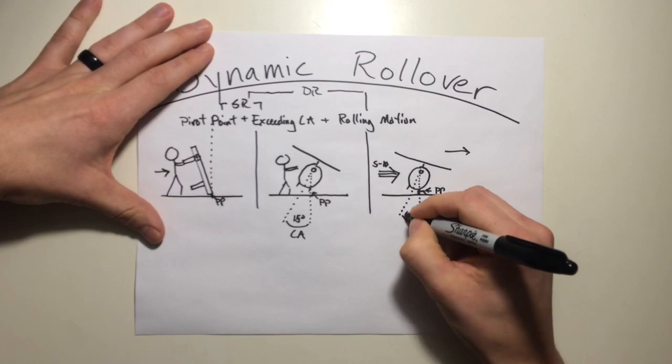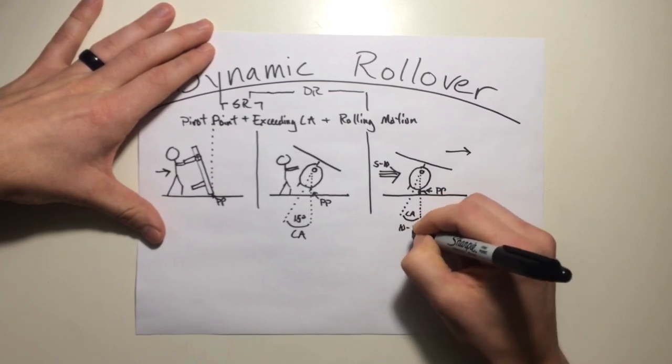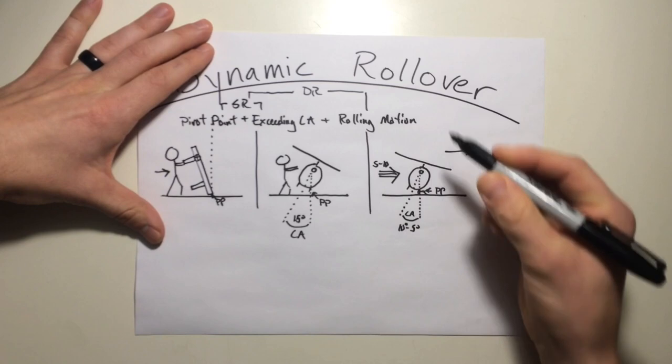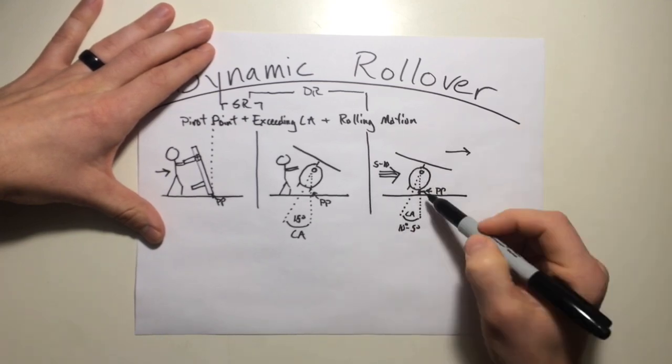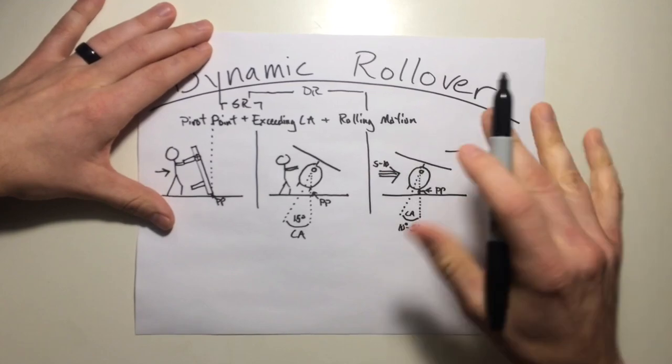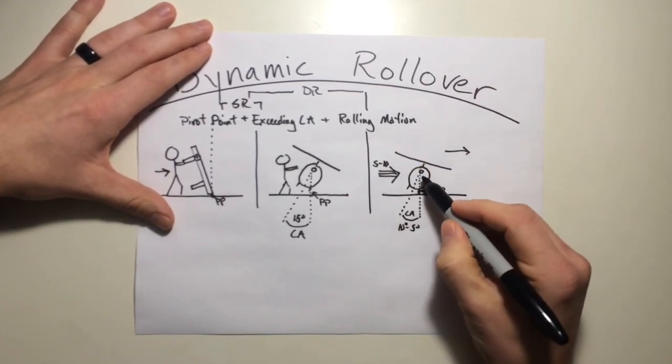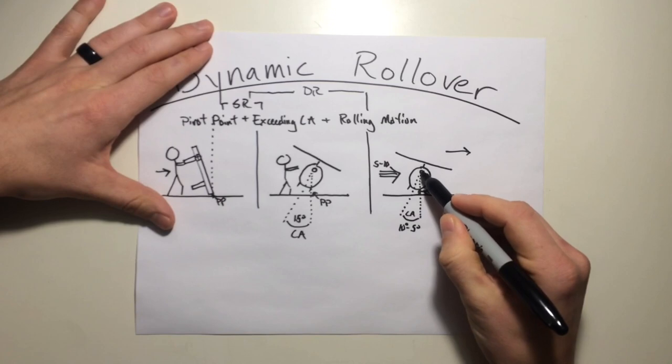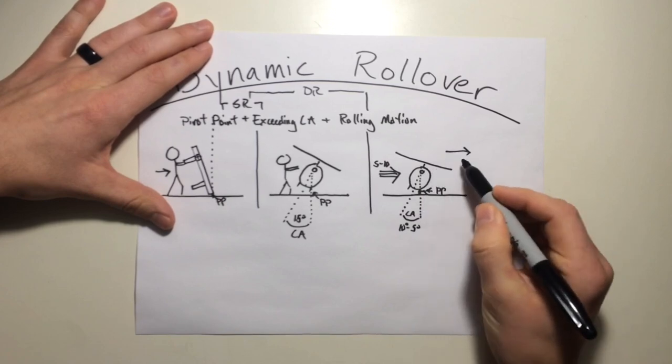Now we're moving along at maybe 5 to 10 or 15 knots or whatever. This critical angle now might have been reduced to maybe 10 to 5 degrees or so. And so we may hit a pivot point and now, with just a few knots of airspeed, now we have a dynamic rollover condition.